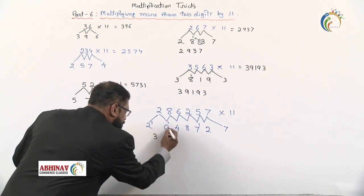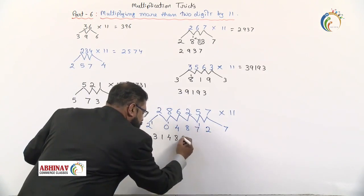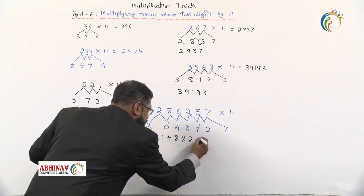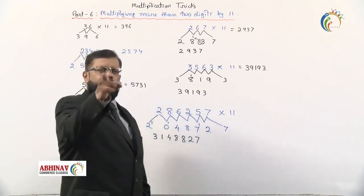0 plus 1 is 1, this is 4, this is 8, 7 plus 1 is 8, this is 2, this is 7. This is the answer when you multiply by 11. So any number when you multiply by 11, this trick is to be done.